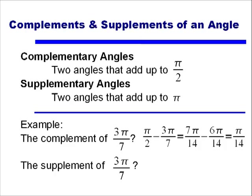The supplement is found the same way, except instead of subtracting 3π/7 from π/2, we'll be subtracting it from π. And again, finding the common denominator, we find that the supplement of 3π/7 is equal to 4π/7.